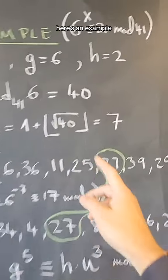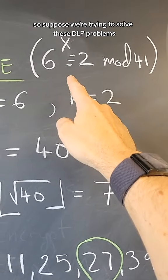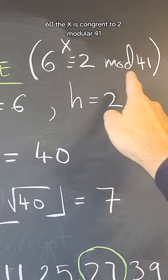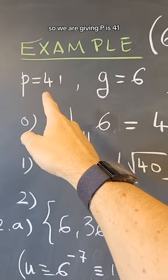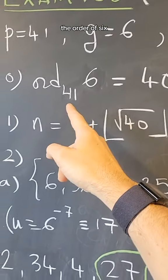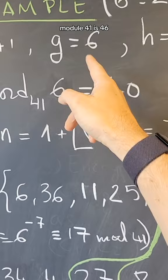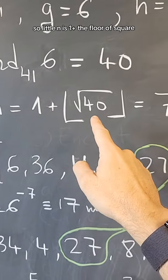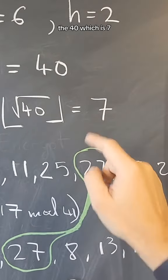Here's an example. Suppose we're trying to solve this DLP problem: 6 to the x is congruent to 2 modulo 41. We are given p is 41, g is 6, h is 2. The order of 6 modulo 41 is 40. 6 is a primitive root. So little n is 1 plus the floor of the square root of 40, which is 7.